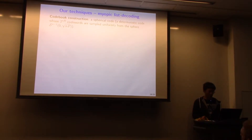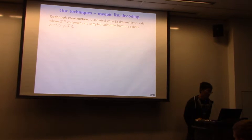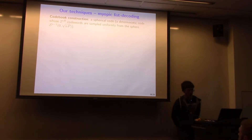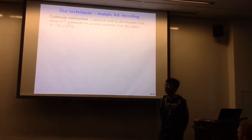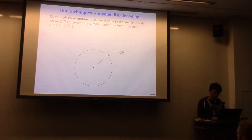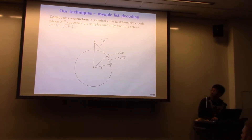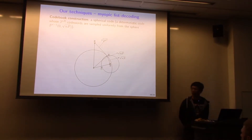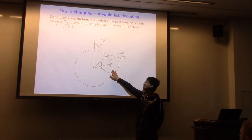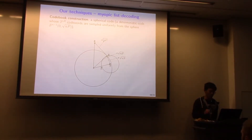Now let's turn to the achievability scheme. The code construction is nothing special — just a random code. You sample 2^(nR) codewords uniformly at random on the sphere of radius square root nP. What's non-trivial is the analysis. The decoder just draws a ball of radius square root nN around Y and outputs the unique codeword inside this ball — if there's no codeword or at least two codewords, it claims an error. So the encoder is a spherical code and the decoder is this bounded distance decoder, very simple.